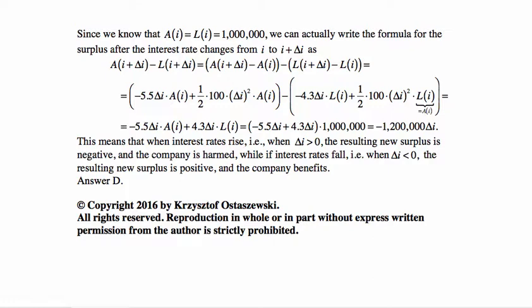So if you look at this, the second part of each formula is the same, and we subtract them, so this cancels out, and the only thing left is the duration part, where we have minus 5.5 delta I times A(I) plus 4.3 delta I times L(I).